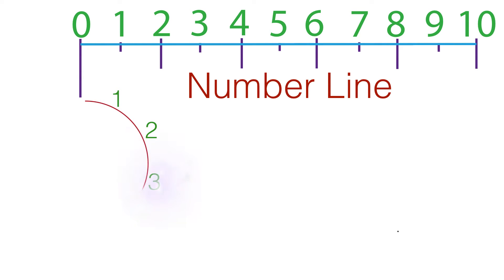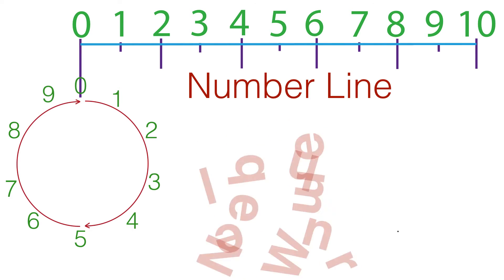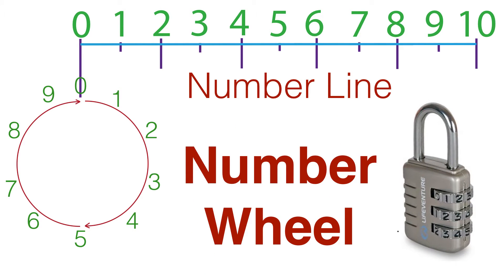We start with a number line to 10 that's wrapped or bent into a circle so that 0 and 10 are in the same place. And that is a number wheel. This shows you the ones digits only. Notice that 0 and 10, 0 is on top and 5 is on the bottom.